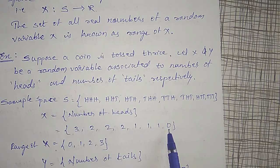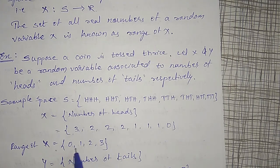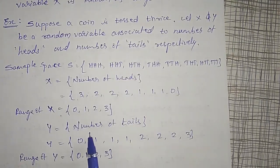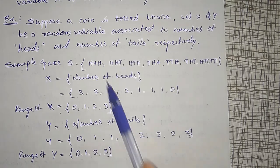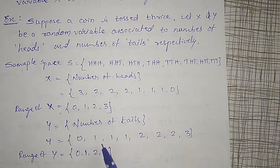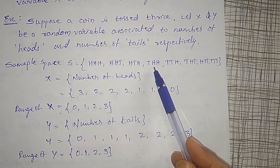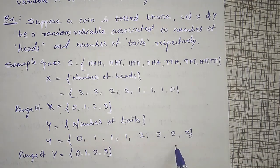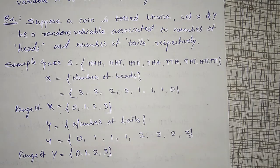Therefore X is taking the values 0, 1, 2, or 3. The set of all possible values of X is known as the range of X. Similarly, I may define Y as the number of tails: 0, 1, 2, or 3. The range of Y is also {0, 1, 2, 3}. Therefore X and Y are known as random variables.